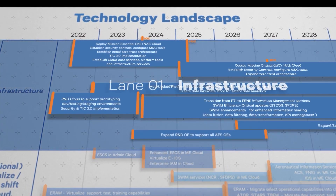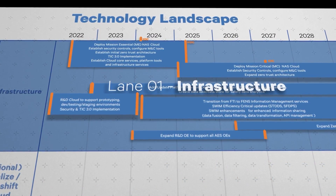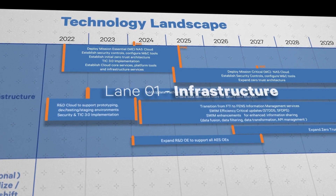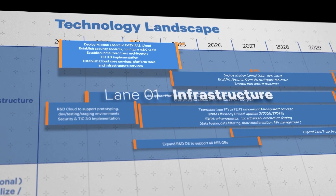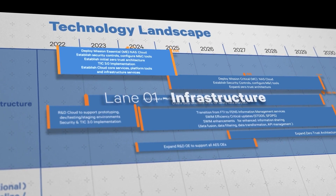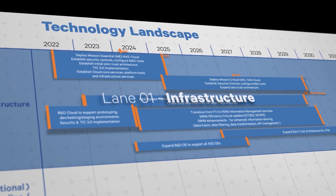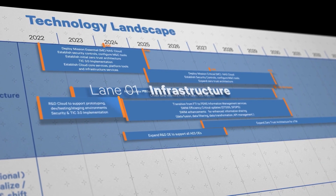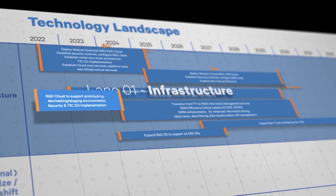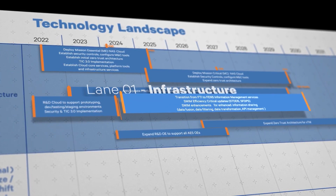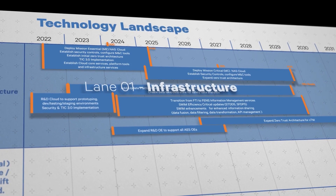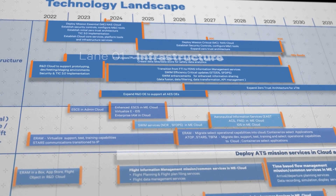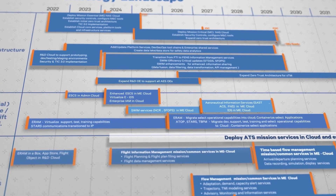The first lane is infrastructure, depicting the foundational infrastructure needed to support services-based architecture. These infrastructure enhancements can be leveraged by FAA programs to create more agile services and applications. The first key activity in this lane is to deploy the Mission Essential NAS cloud, which will host some of the FAA's efficiency critical and essential services. We can then move on to deploy the mission critical NAS cloud, which will host some of the FAA's safety critical services. Other key activities are standing up an R&D cloud to support rapid development and prototyping activities within the FAA, transitioning the current FAA telecommunications infrastructure to FAA Enterprise Network Services, or FENS, which will provide information management services and support future technologies, and providing system-wide information management infrastructure updates to support advanced data management.